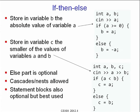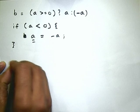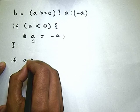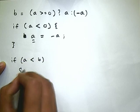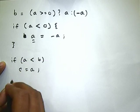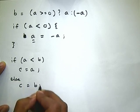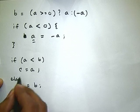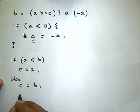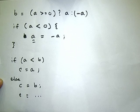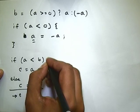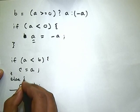Statement blocks are optional but best used. Without curly brackets, the code can be visually misleading. For example, if you add a statement like 'E = some stuff', even if it appears indented under the else, once the else clause has finished, it is outside the scope. It is generally a good idea to put curlies even if you think you do not need them.